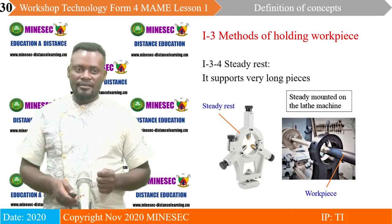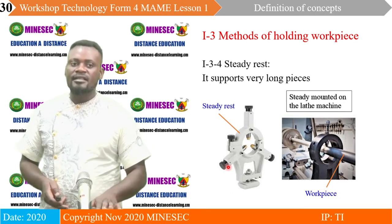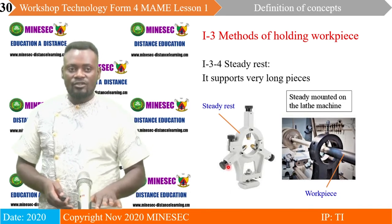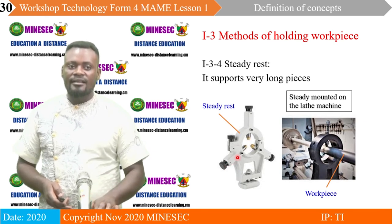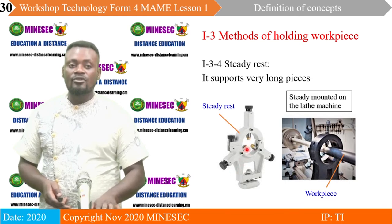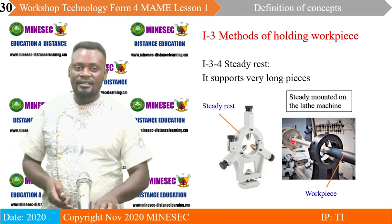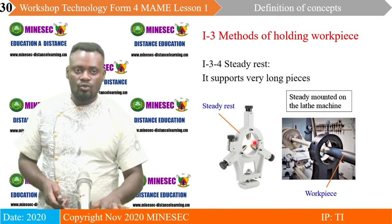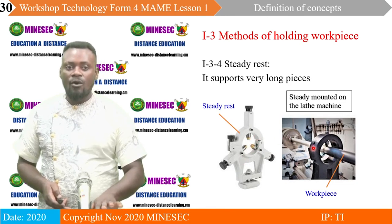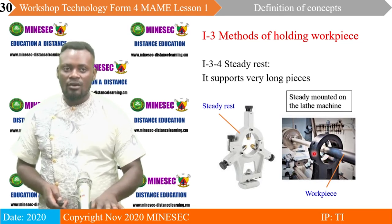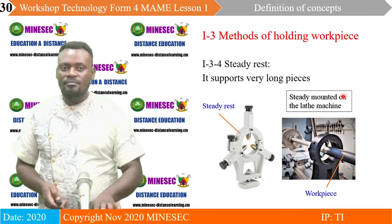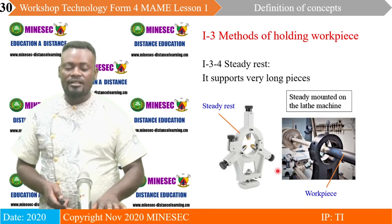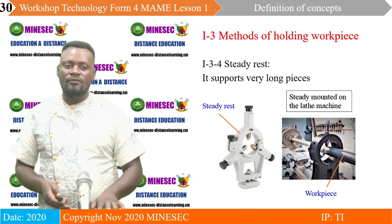We now have the steady rest. The steady rest is similar to the chuck but has no jaws that can actually clamp the workpiece rigidly. It helps to support long workpieces — it equally has three jaws which you need to adjust so that it falls at the center to hold workpieces securely. The steady rest is always mounted on the lathe machine bed, just like the carriage of the lathe machine.